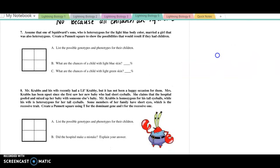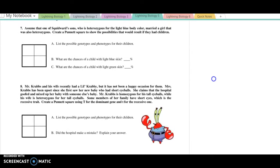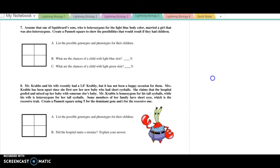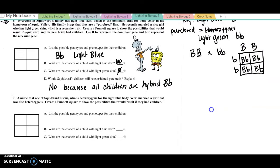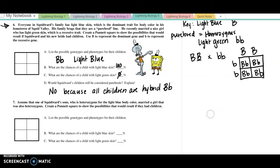Question number seven. Assume that one of Squidward's sons, who is heterozygous for light blue body color. So we're still using the same key up here. Assume one of his sons, so Big B, little b, is going to marry a girl who is also heterozygous. So she's also blue skin and heterozygous. Create a Punnett square to show the possibilities. So here's the cross.